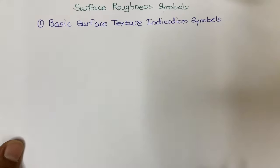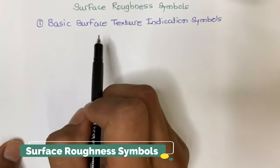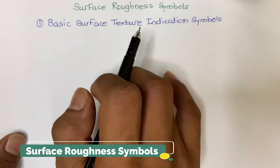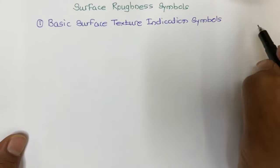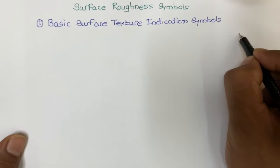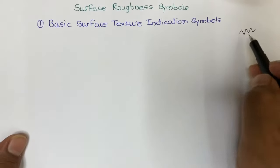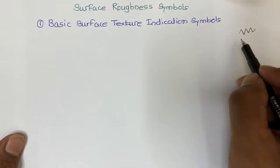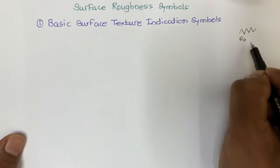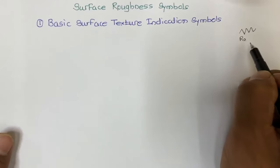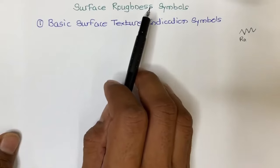Hi everyone. Today we will discuss surface roughness symbols. In the previous video we discussed the Tomlinson surface meter and Telesurf roughness tester, and how these instruments generate a roughness profile. We can measure this actual roughness profile to find out different roughness parameters — maybe RA, RY, RZ, and RMS. So now we will discuss different surface roughness symbols.